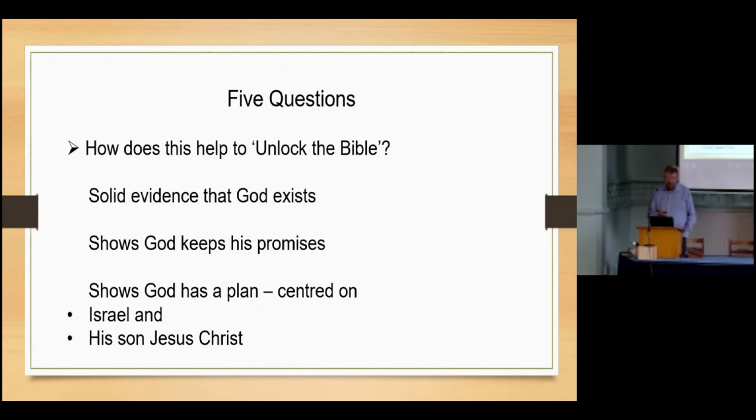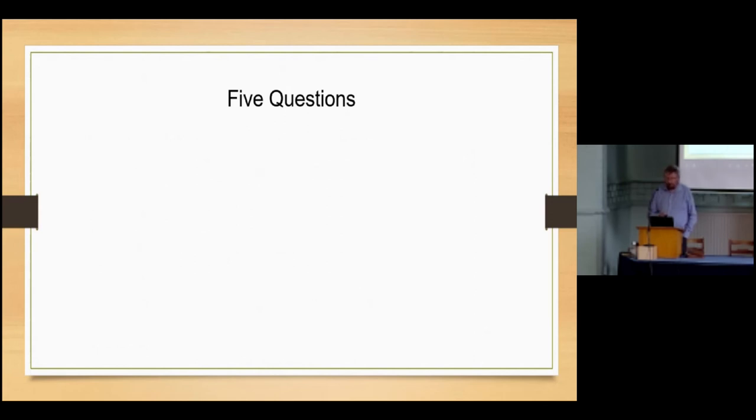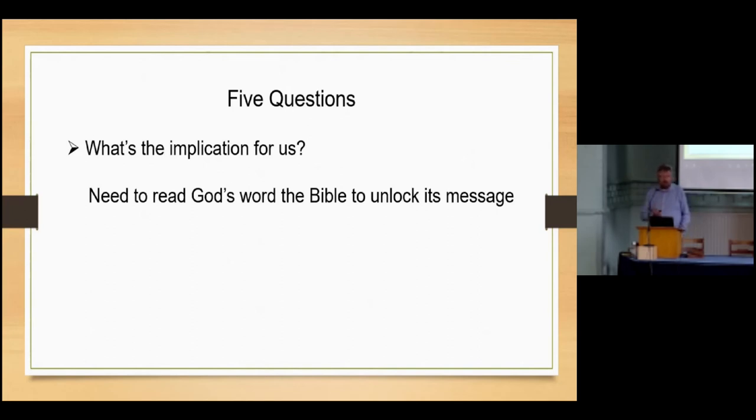So the fifth question: What's the implication for us? Yes, we see Israel in the papers and on our TV screens or our phones, we see it all the time, but what's the implication for us? What should it cause us to do? What do we have to do? We need to read God's word for ourselves. We need to unlock its message. It's not difficult. Yes, it's a long book, there's lots of pages, lots of chapters, lots of different books, but it's got one inspired message. It's God speaking to you and to me. And by reading it for ourselves, we can unlock its message and understand what God is telling us.